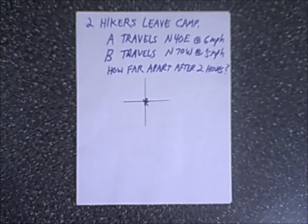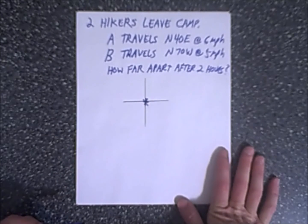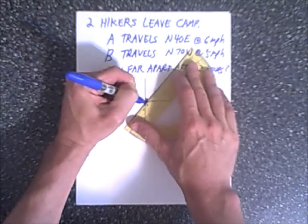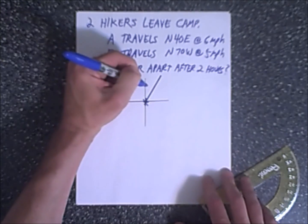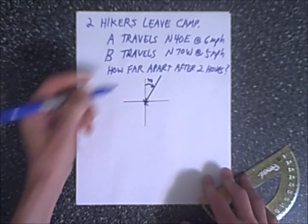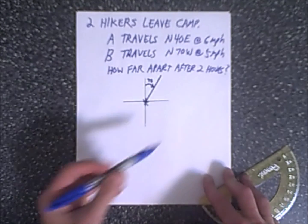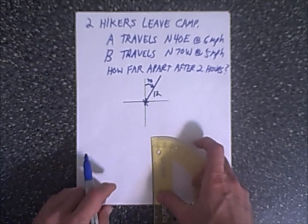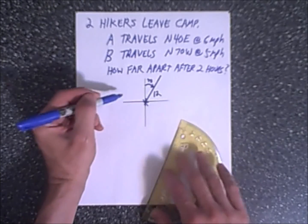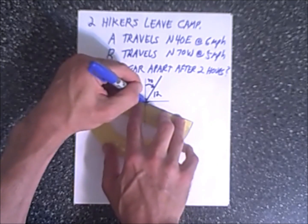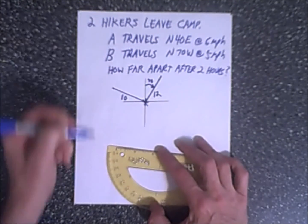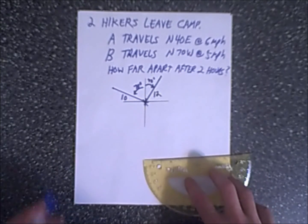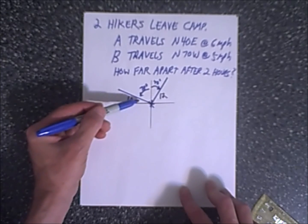Since we're using navigation, I'm going to draw a north, south, east, west grid. Traveler A goes north 40 east. So as we saw before, you start at north and we're going to go 40 degrees east and that'll give us a rough sketch of about like this. This is 40 degrees. The distance that A traveled is six miles per hour, so after two hours that person has gone 12 miles. And then at the same time B has left and he or she has gone north 70 degrees west. So it's going to look something more like this. The length of this one is 10 miles. This is going to be 70 degrees.